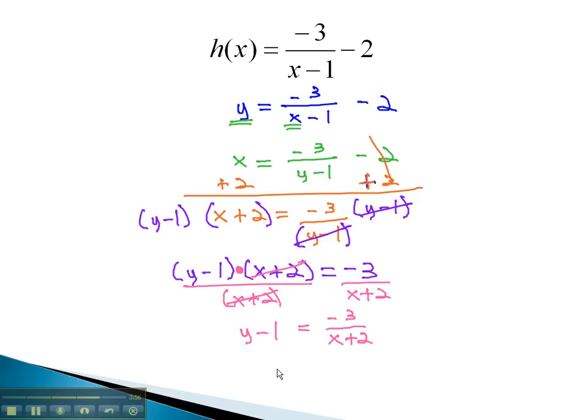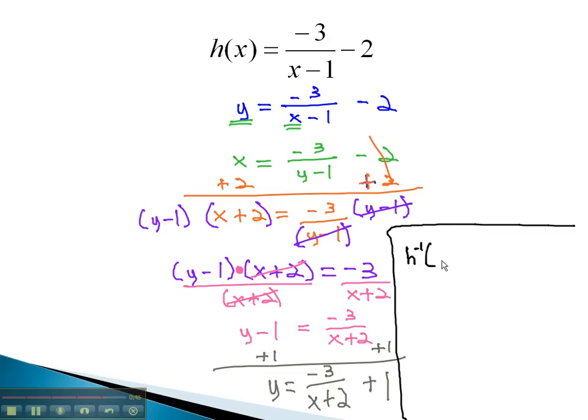To get the y completely alone, all that's left is adding 1 to both sides, and we get y equals negative 3 over x plus 2, plus 1. This, then, is our inverse function. We can represent it as the inverse of h, as h inverse of x, is equal to negative 3 over x plus 2, plus 1. This is the inverse of the function h. It will undo all the work that h does in the original function.